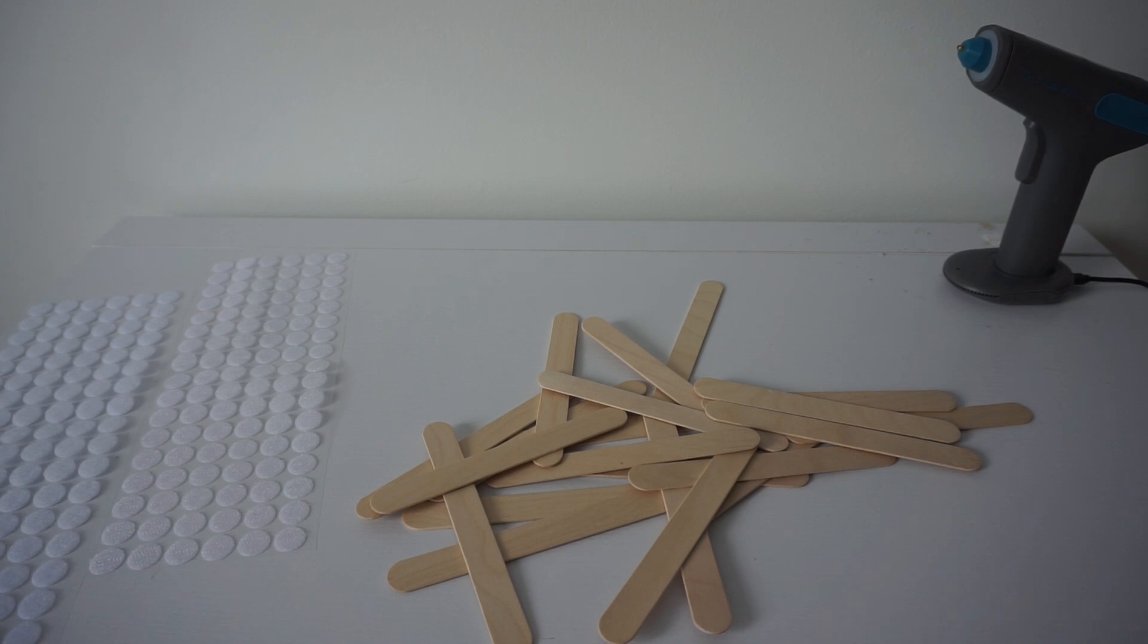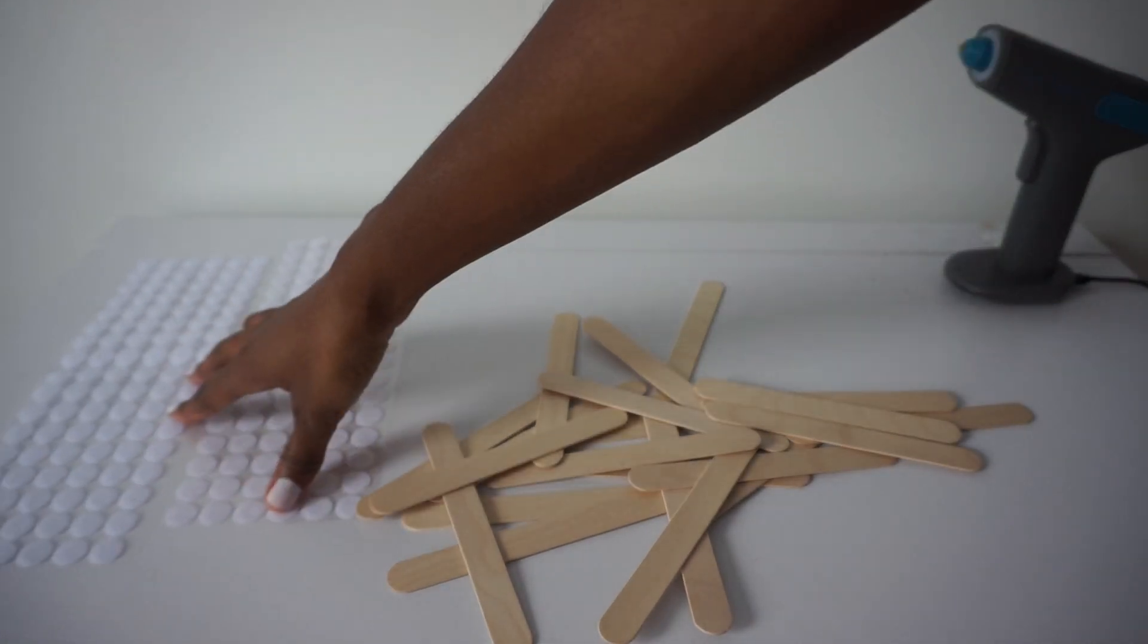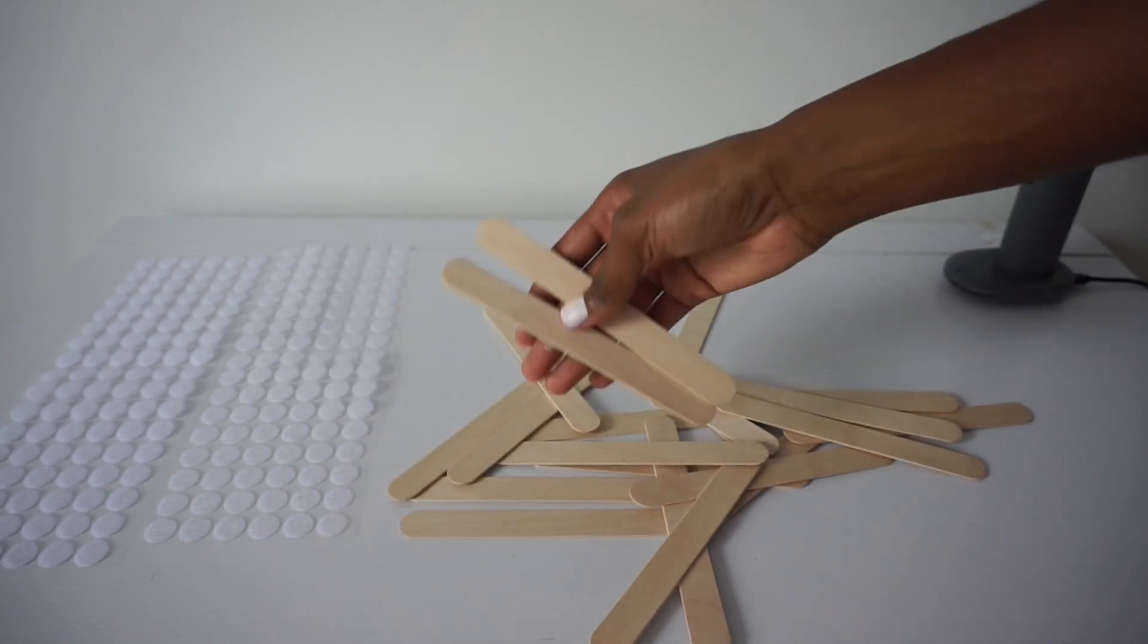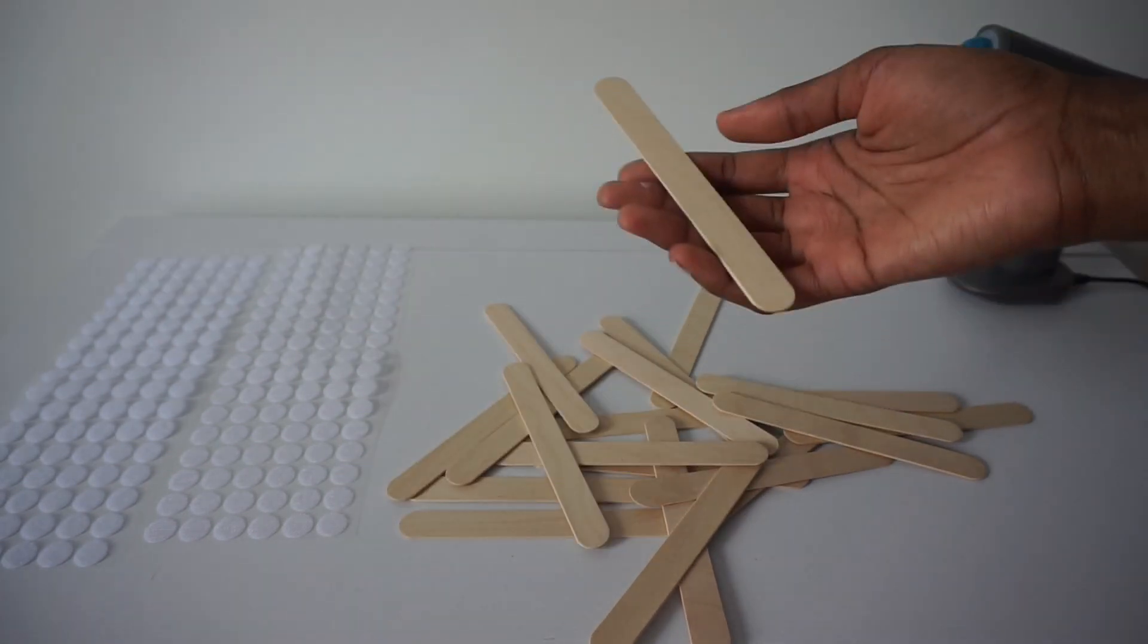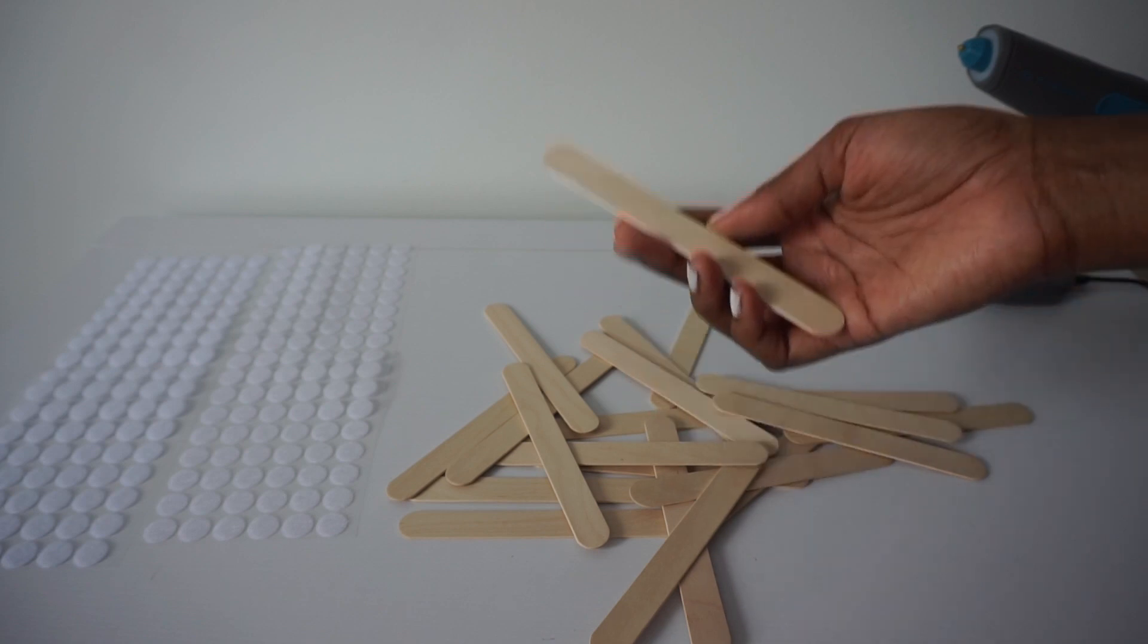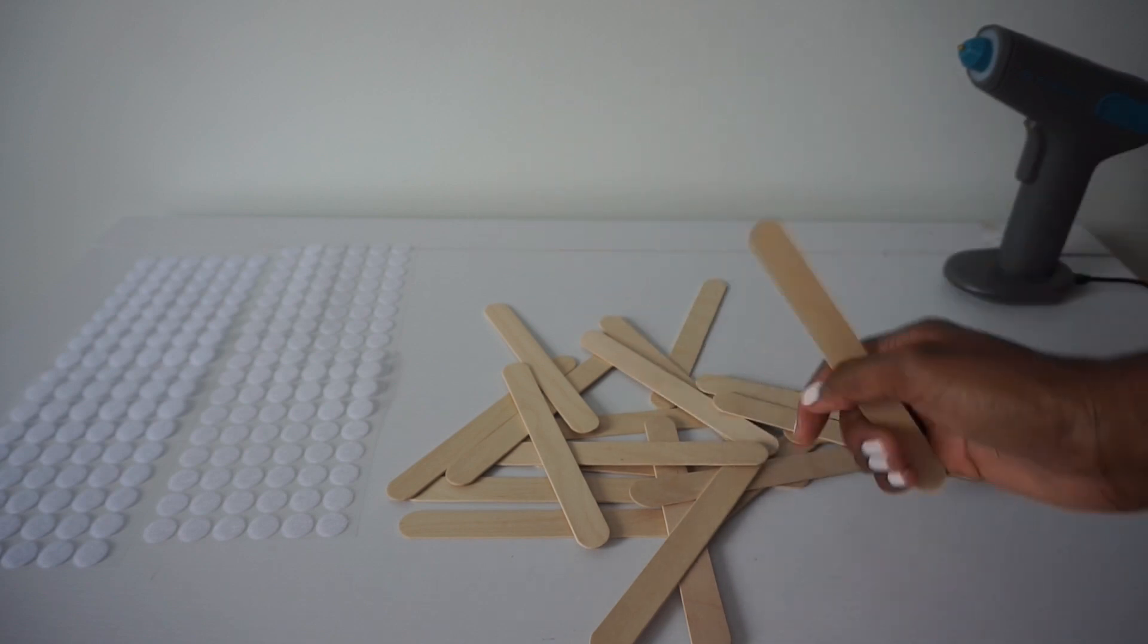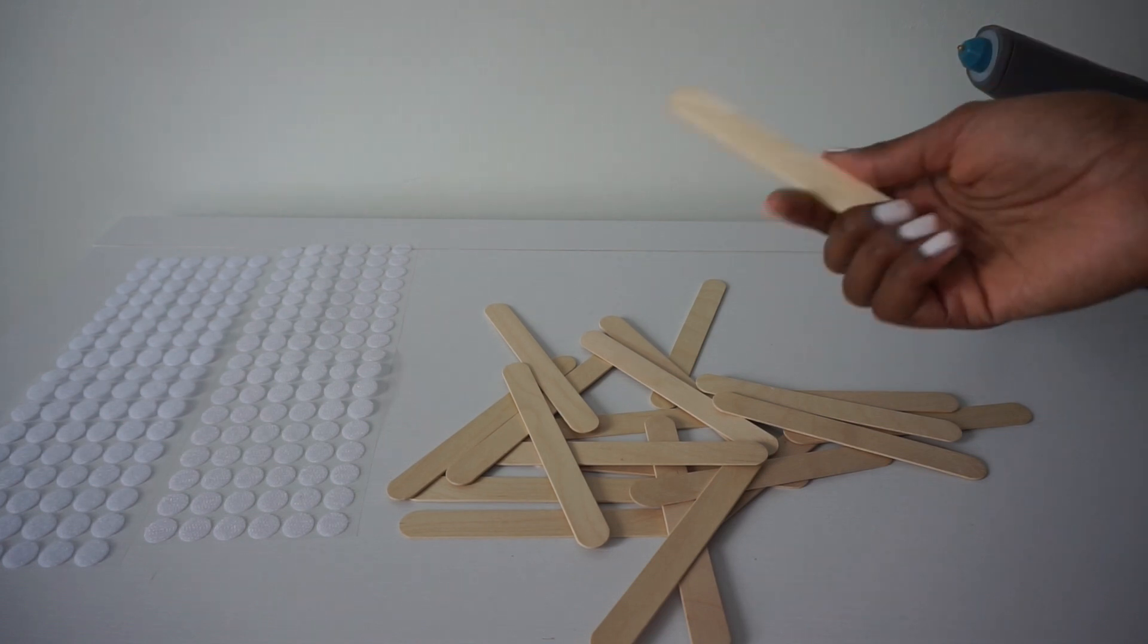What you will need: I have several velcro dots here, I have craft sticks or popsicle sticks. Now you can go with whatever size you choose - you can go with really large sticks, they have smaller skinnier sticks. If you want to use colorful sticks you can go with that. I'm just going with the natural wood stick. These are slightly larger than the normal size craft stick.